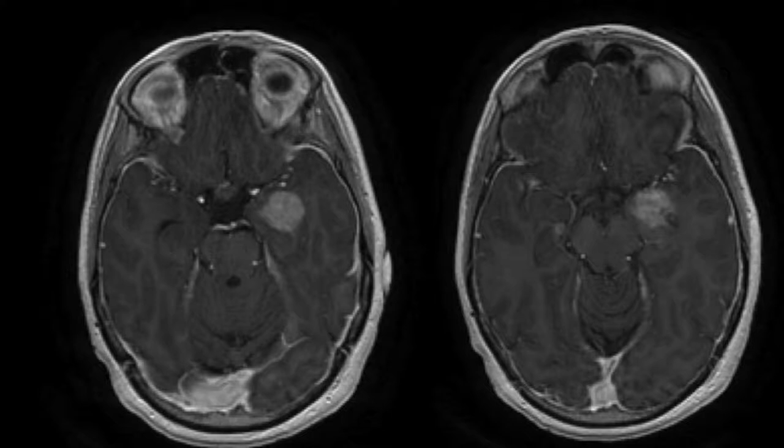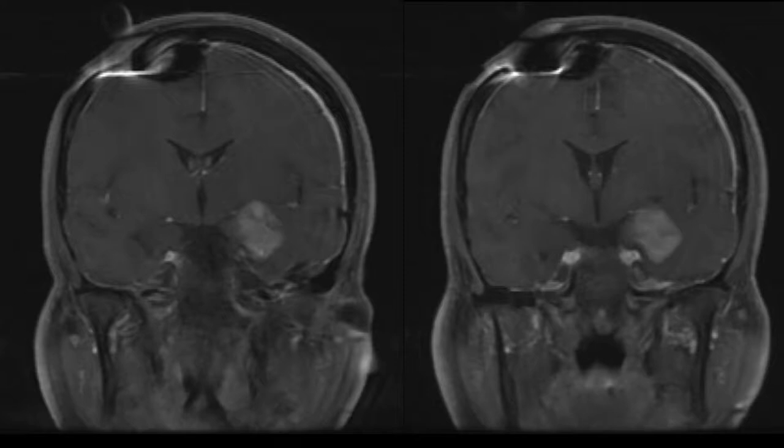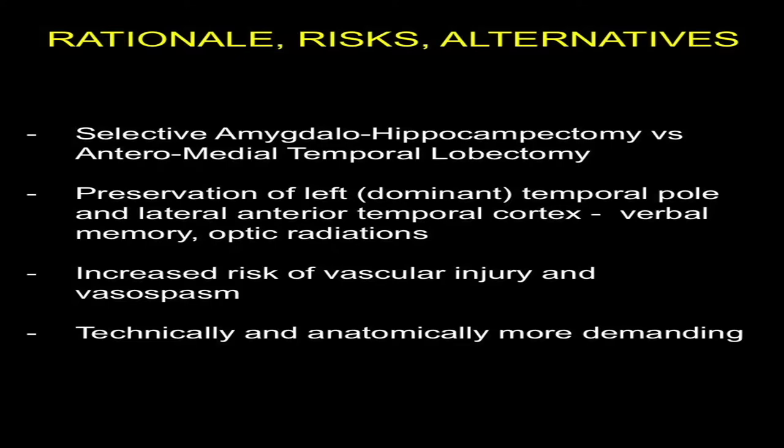On the MRI, we can see the location of the medial temporal lesion, left-sided, involving the uncus, the amygdala, the hippocampus, here in the FLAIR sequence. We discussed the approaches including selective approach for amygdala hippocampus versus an anterior medial temporal lobectomy.